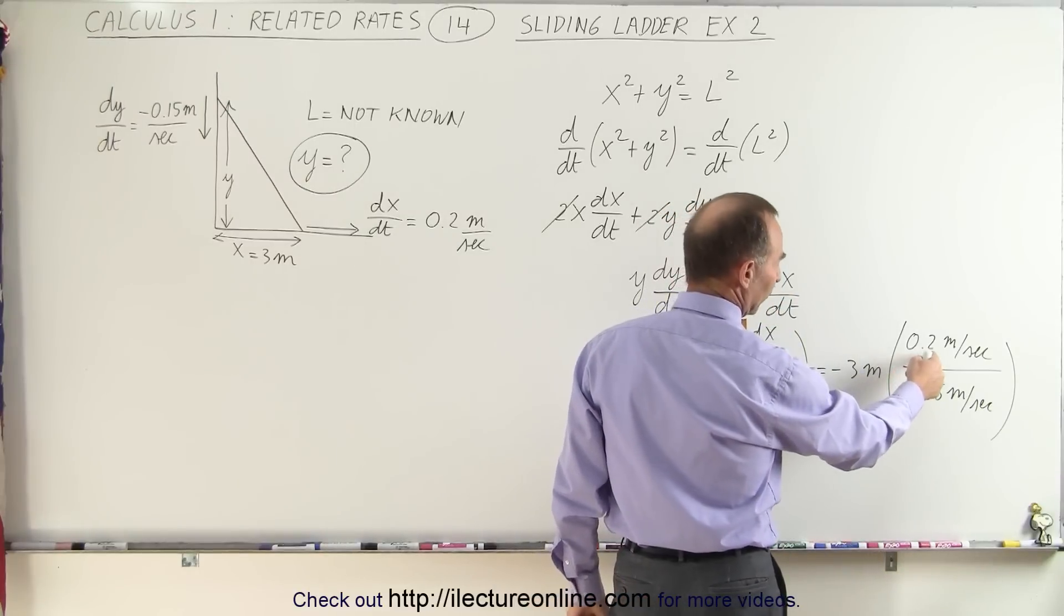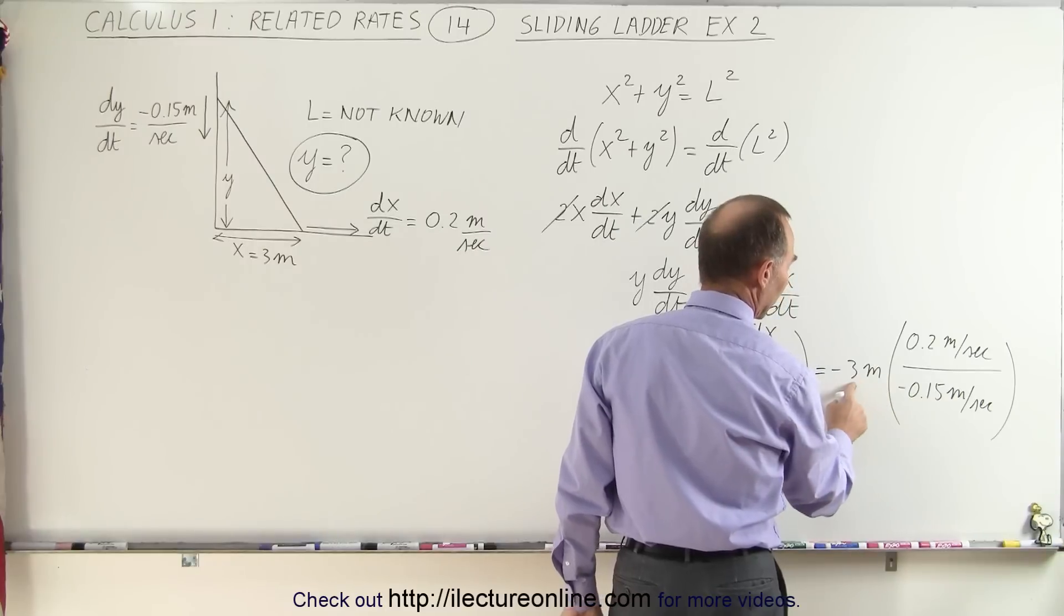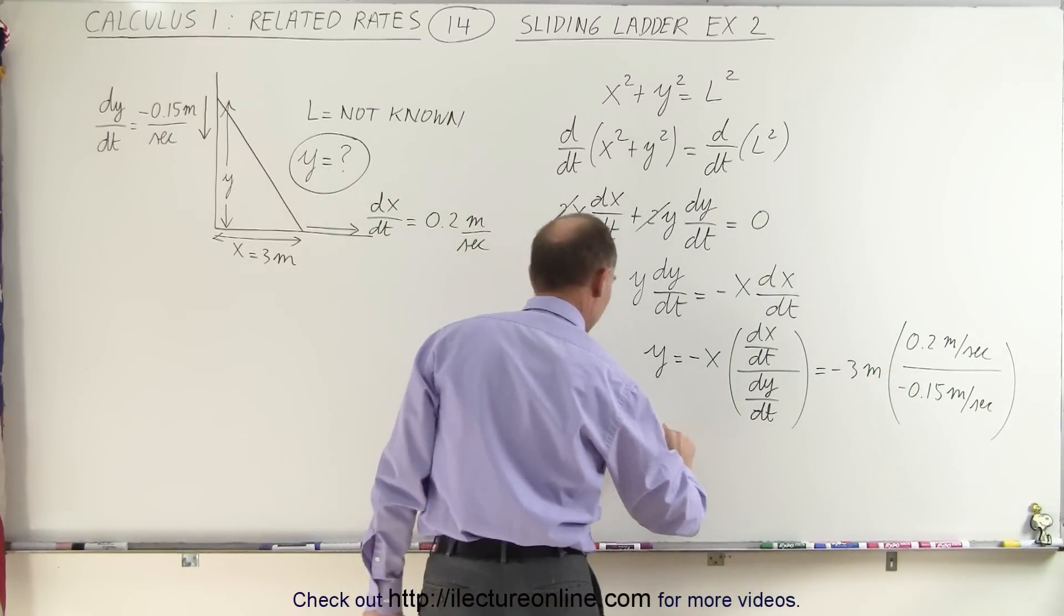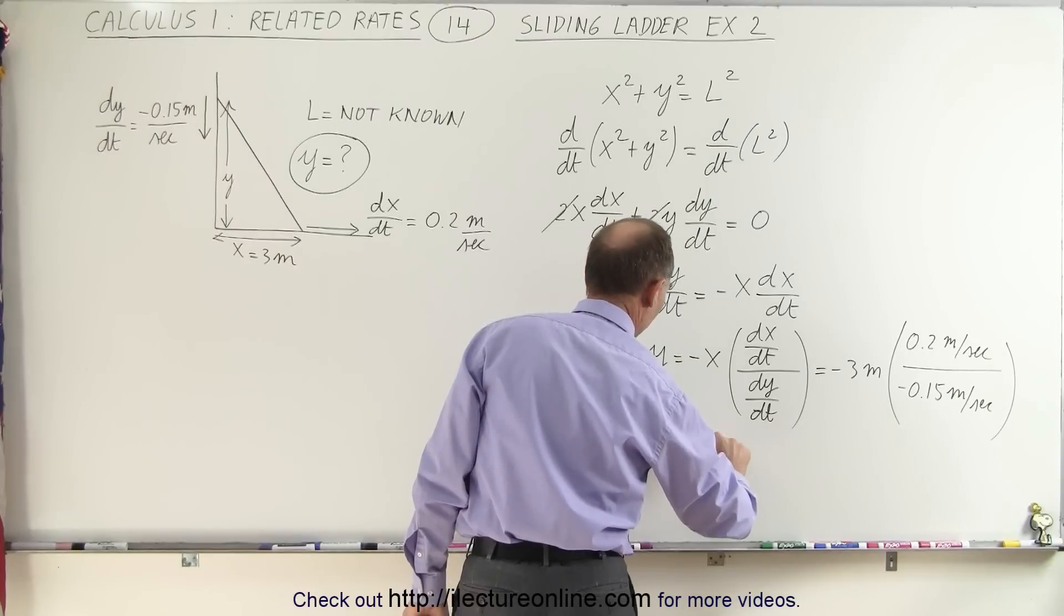So this is a ratio of 4 to 3 multiplied by times 3. The 3's cancel out, we get 4, so therefore y equals 4 meters.